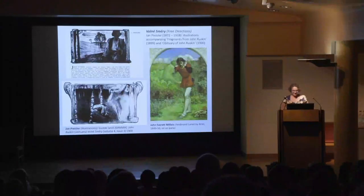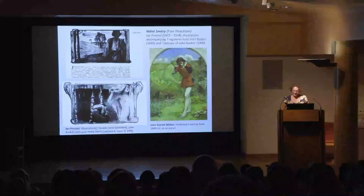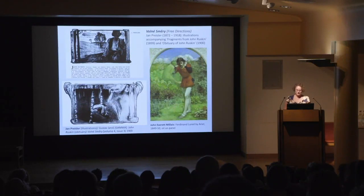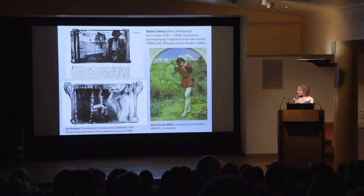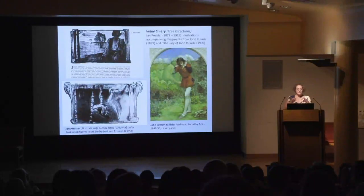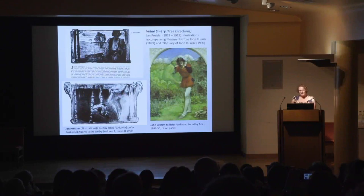We're looking at pictures by Jan Preissler. He was predominantly a painter, but for Volné směry — Free Directions — they mainly reproduced his sketches and illustrations in charcoal or pencil. These illustrations were used specifically and intentionally with an article about Ruskin. In every single article about Ruskin in Czech 1900s journals, he is always connected to the Pre-Raphaelites. Every single occurrence of Ruskin is also linked to a propagation and celebration of the Pre-Raphaelites.